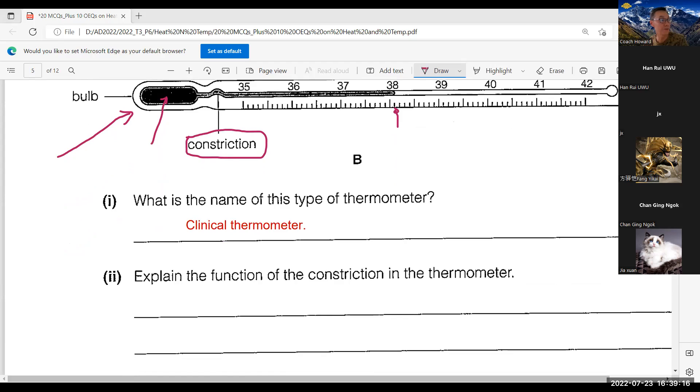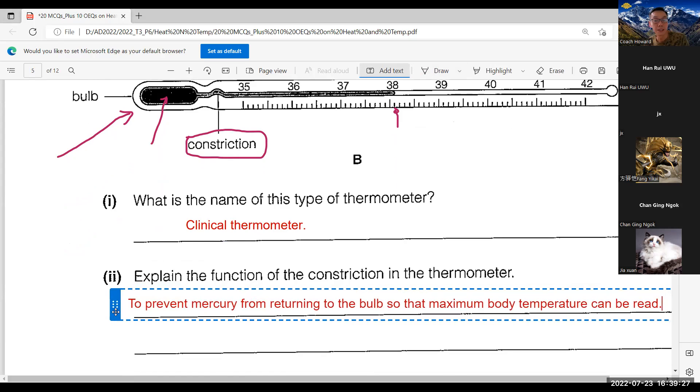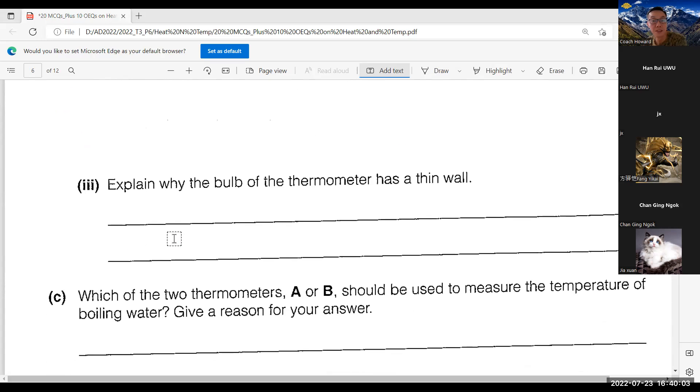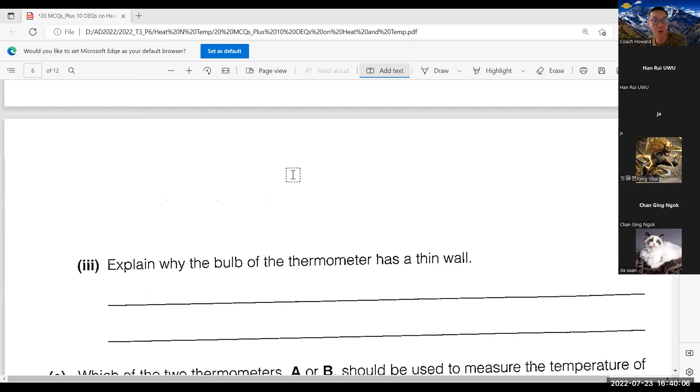This constriction acts like a brick to prevent the mercury from returning to lower temperature immediately. Usually this constriction can hold the temperature here for about 10 seconds. The function of this constriction is to prevent mercury from returning to the bulb so that maximum body temperature can be read. Explain why the bulb of thermometer has a thin wall.